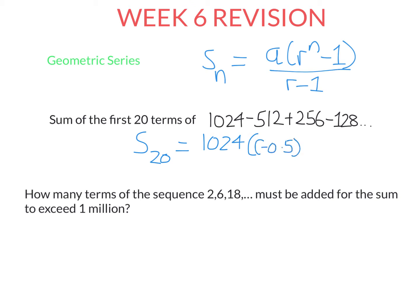Whenever we substitute a negative, always use brackets. So A, R to the power of N minus 1, all divided by R minus 1. If we put that in our calculator, we get approximately 682.666. We don't get a whole number here because these terms eventually are going to become decimals.